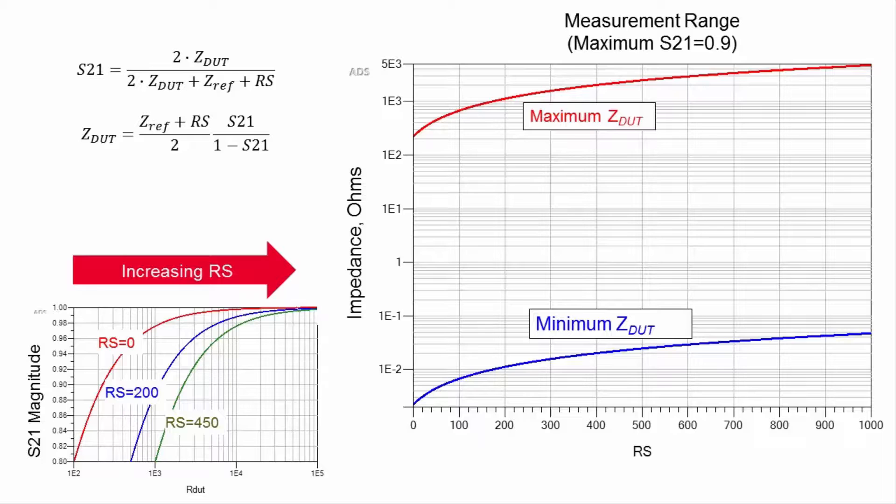While the dynamic range of the measurement is limited by the instrument, the measurement range or window can be scaled. The 225 ohm maximum measurement limitation is due to decreasing sensitivity as S21 approaches 1.